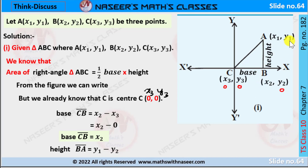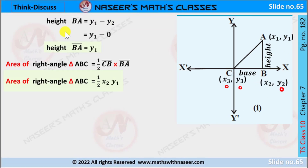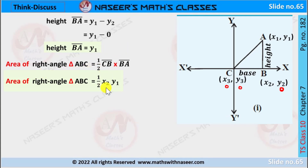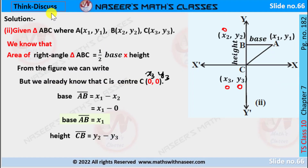The height is BA, which is the difference of y1 and y2. Since y2 is 0, height BA equals y1 minus 0, so height BA equals y1. Substituting base and height values, the area of triangle ABC is 1/2 times x2 times y1. Now Think and Discuss, second figure, page number 182.